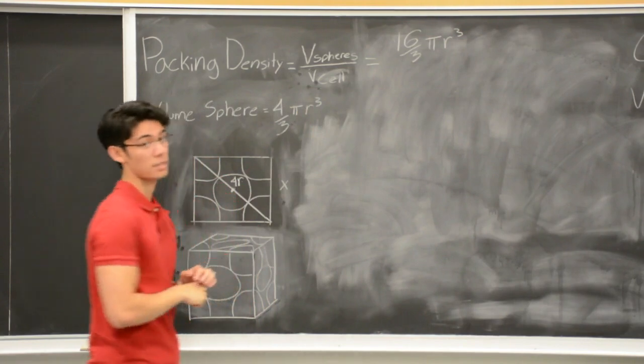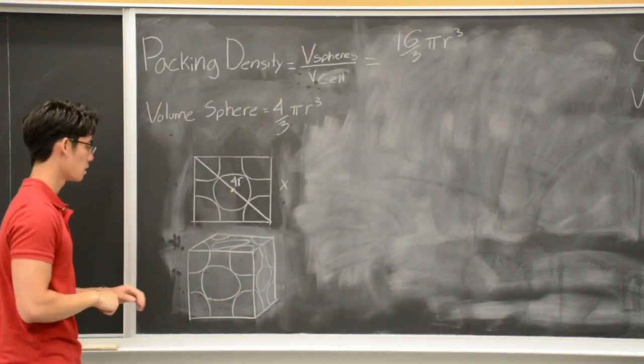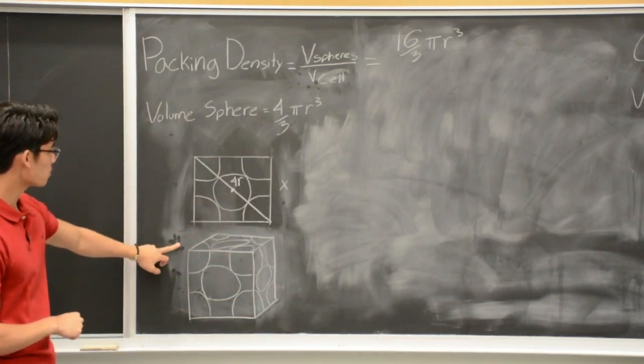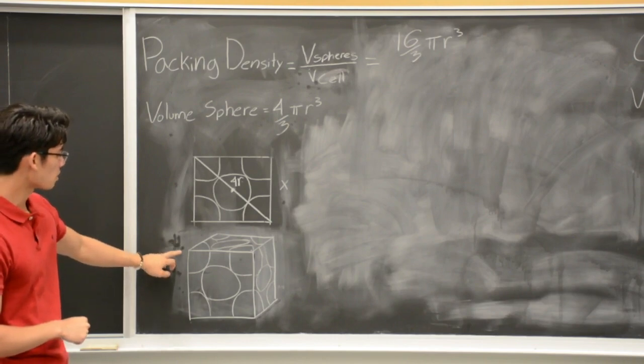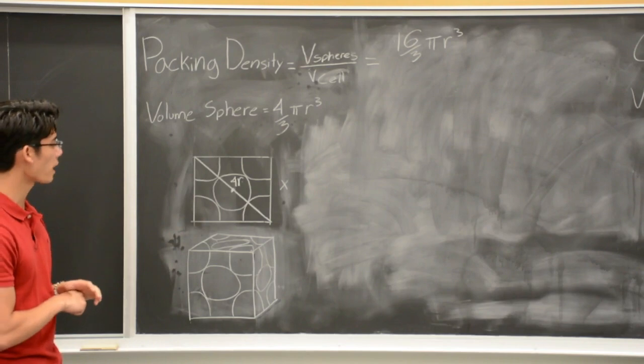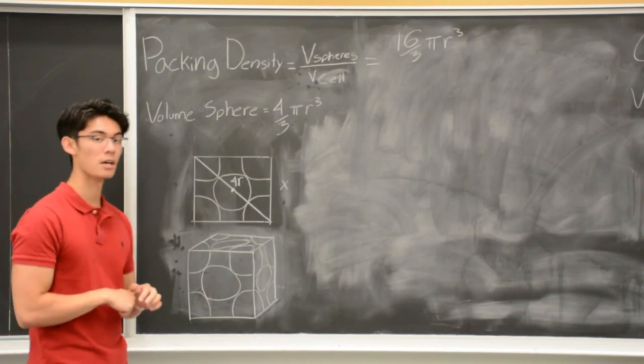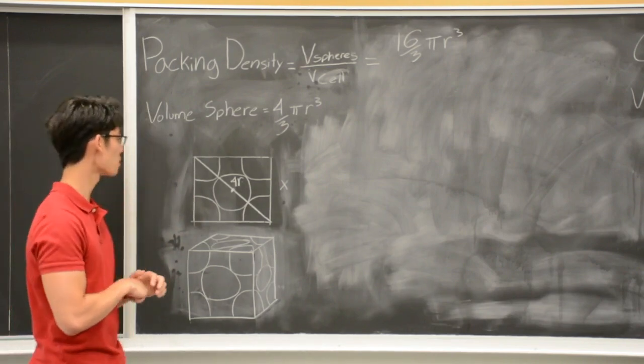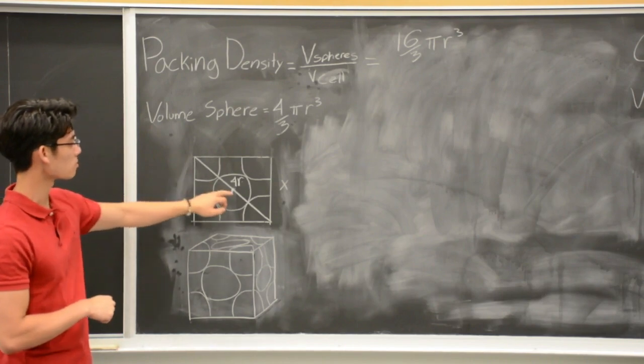Now, the volume of the unit cell. That is just the volume of the cube, which is length times width times height. However, the only information we have is the radius, and so we need to determine the length of one side in terms of the radius.